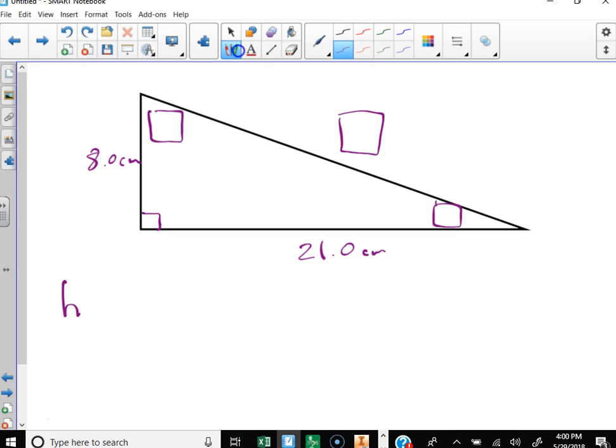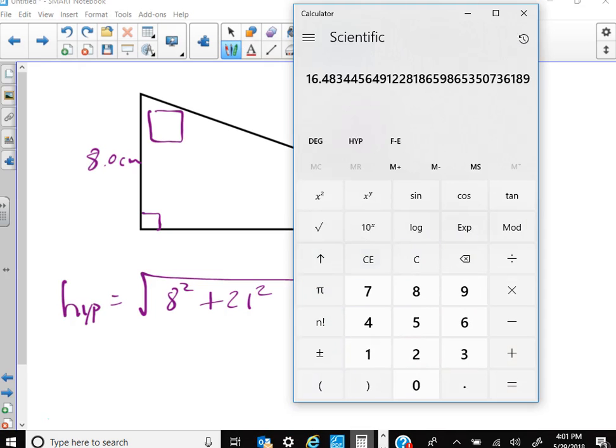If I'm going to find the hypotenuse in this case, I'm probably just going to go ahead and do Pythagorean theorem, which is 8 squared plus 21 squared, and then take the square root. So let's see, 64 plus, I don't have 21 squared committed to memory, so we're going to go there, 441 equals, and then take the square root of that.